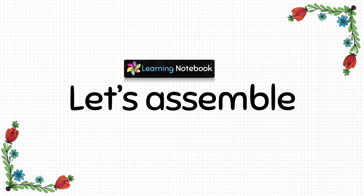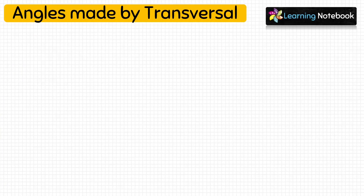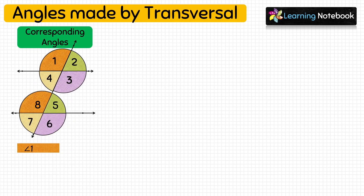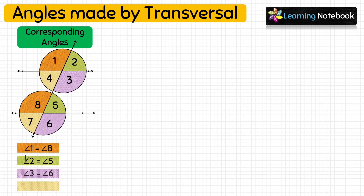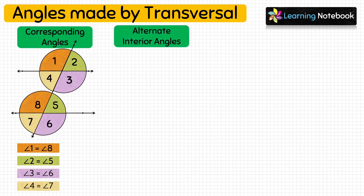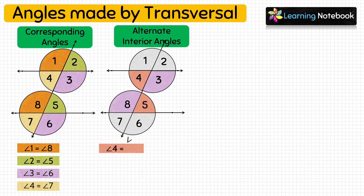Now let's assemble our project. Take a white chart paper and write the heading: Angles Made by Transversal. First, we proved that the pairs of corresponding angles made by a transversal are equal — angle 1 equals angle 8, angle 2 equals angle 5, angle 3 equals angle 6, and angle 4 equals angle 7. Next, we proved that the pairs of alternate interior angles are equal — angle 4 equals angle 5 and angle 3 equals angle 8.